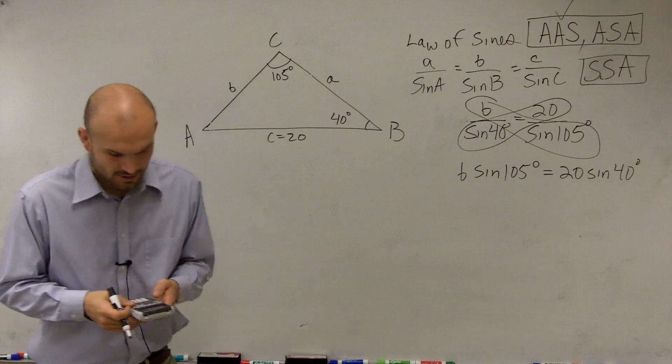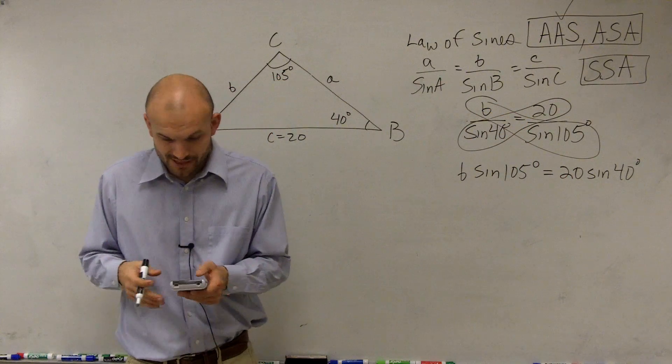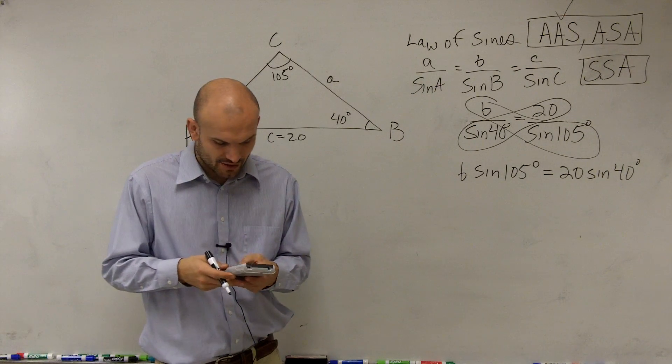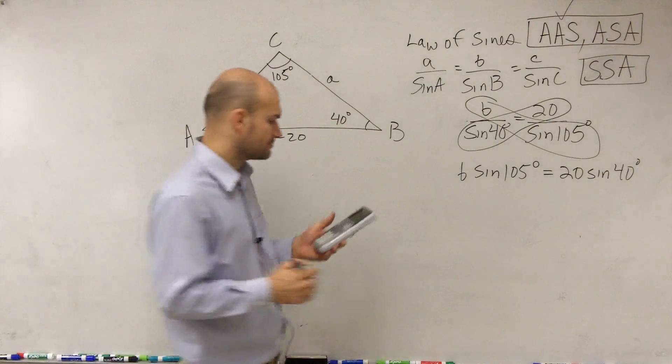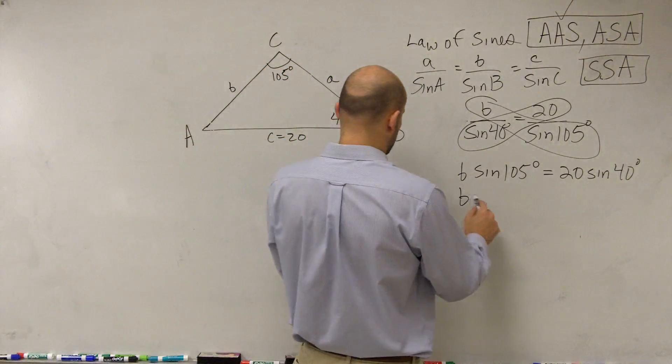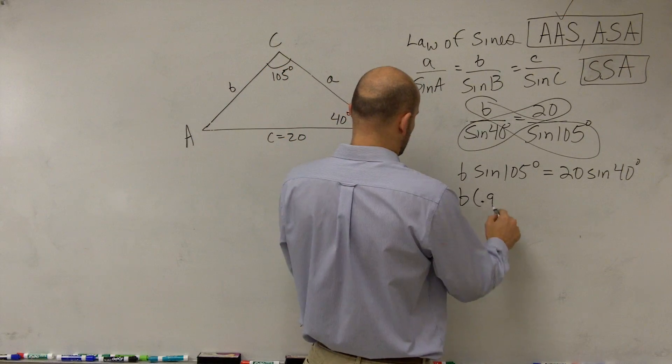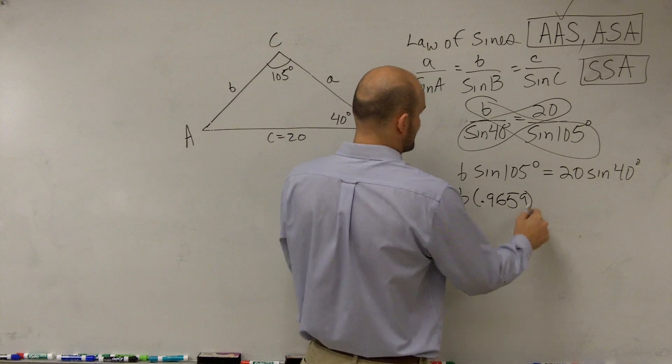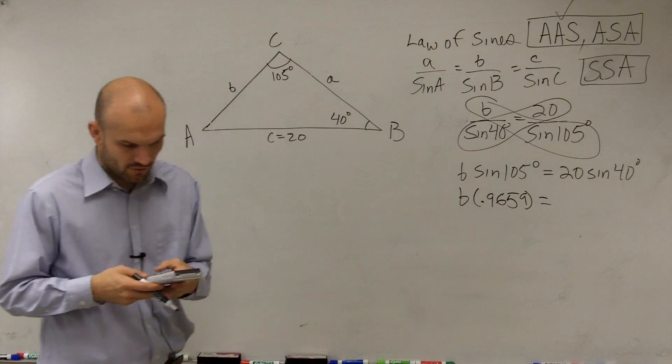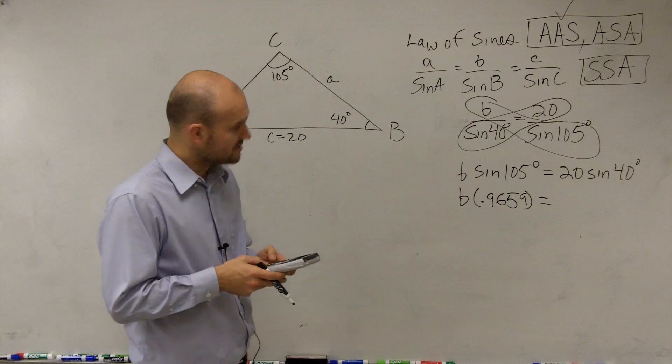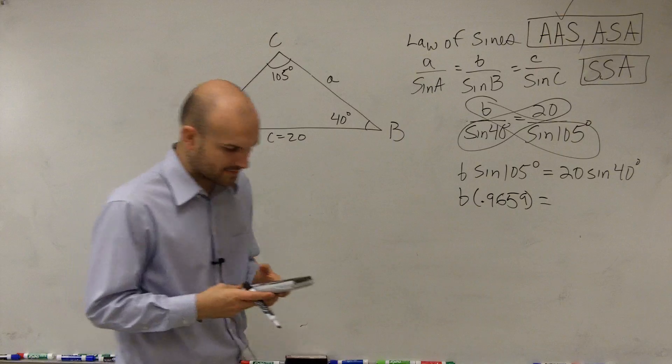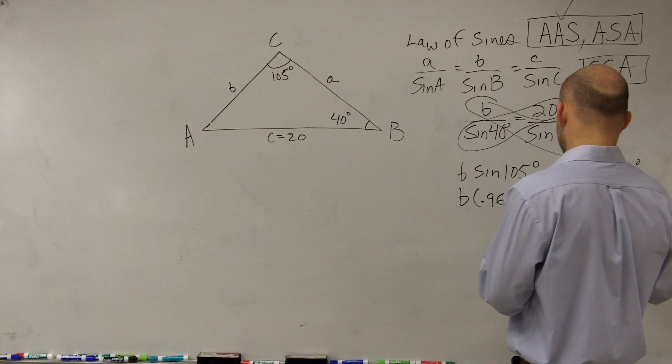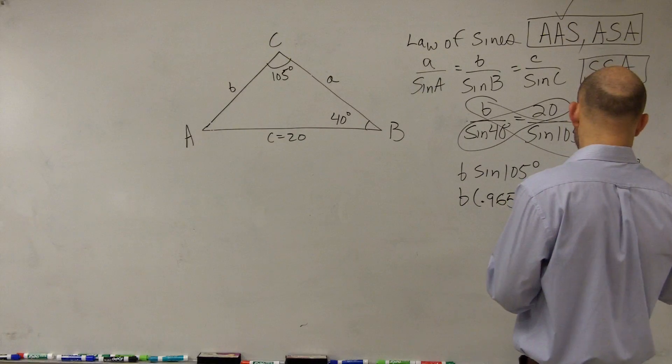So now what we'll do is we're just going to evaluate. So you're going to have to use your calculator. Make sure that you're going to be in degree mode. And you can do the sine of 105. And we're going to round. So I have b times 0.9659 equals the sine of 40 times 20. And that's going to equal 12.8558.